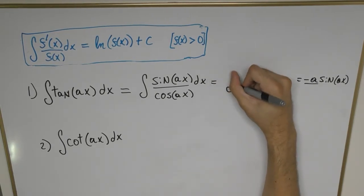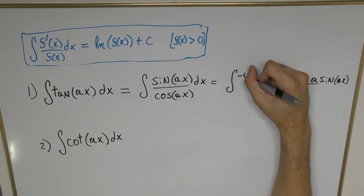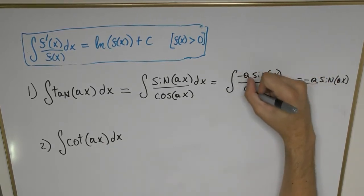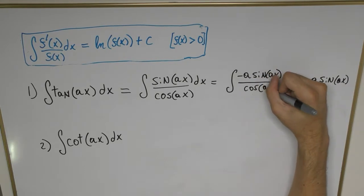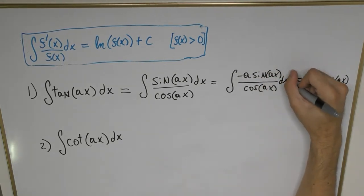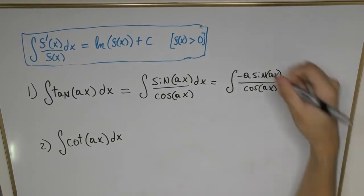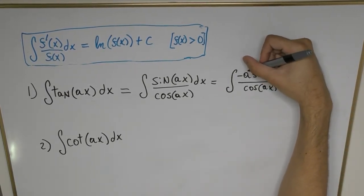minus a sine ax divided by cosine of ax dx. Now that we've included the factor minus a in the numerator, we need to also include it as a denominator outside the integral to keep this consistent with the previous integral.